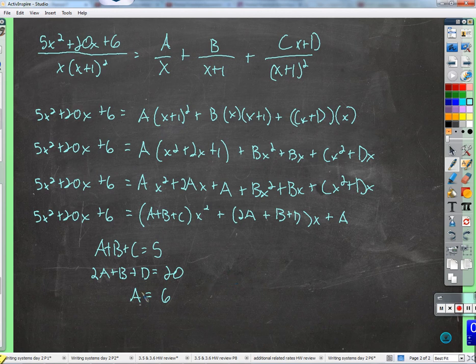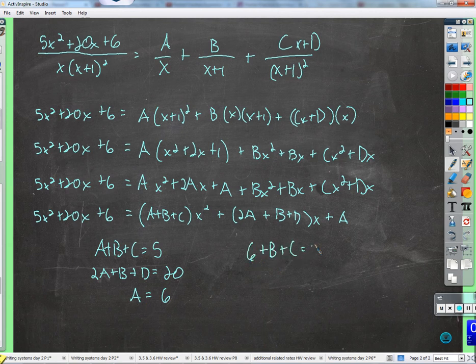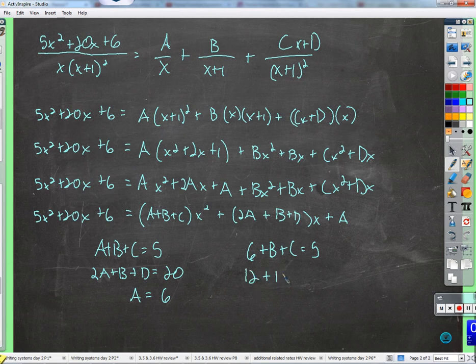Even though a is 6, and it seems like it's going to make our world easier, we get 6 plus b plus c equals 5, and 12 plus b plus d equals 20. But now look what we have. We have a system of two equations but three variables. It's just undoable.